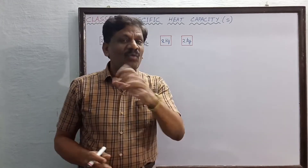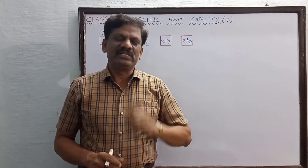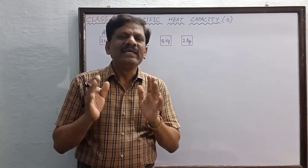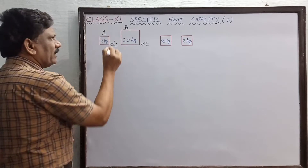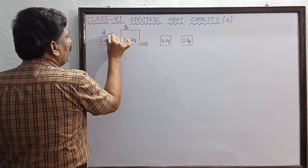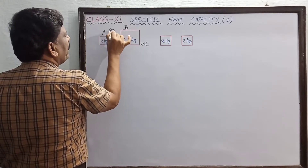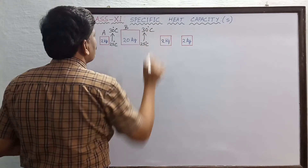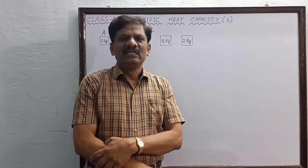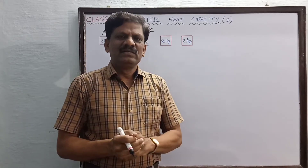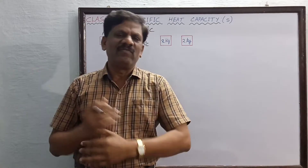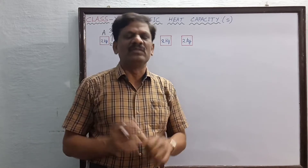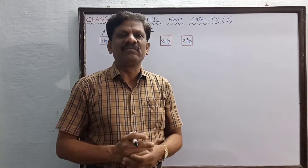Let both bodies have the same initial temperature — 25 degrees Celsius. Now I am going to supply some heat to both substances so that the temperature increases. Body A increases its temperature from 25 to 30 degrees Celsius, and body B also has to be increased from 25 to 30 degrees Celsius. It's like heating 2 kg of water on one stove and 20 kg of water on another stove, producing the same rise in temperature in both.